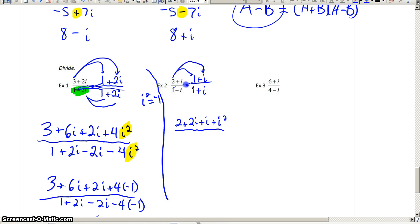i times i is i squared. Down below, 1 times 1 is 1. 1 times i is i. Negative i times 1 is negative i. Negative i times itself is negative i squared.